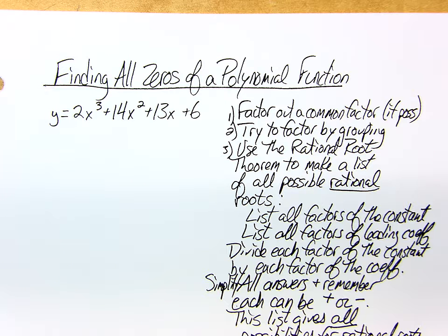All right, so today we are looking at finding all the zeros of a polynomial when it's not the sum or difference of two cubes, and you cannot factor by grouping.